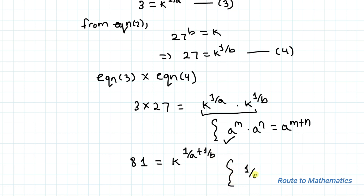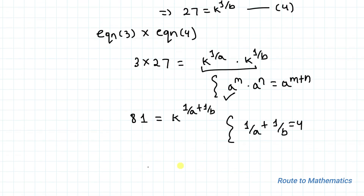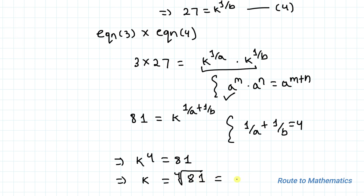So from equation 1 we have 1/a + 1/b = 4. This implies k to the power 4 equals 81. So by taking the 4th root, we can write k equals the 4th root of 81, which equals 3. That is our answer. I hope you have understood the solution.